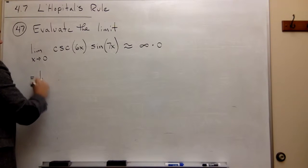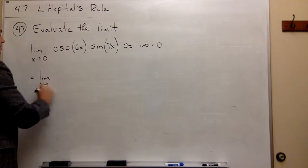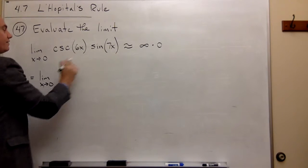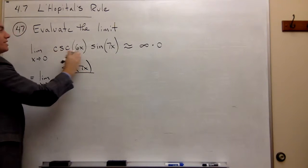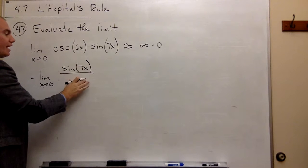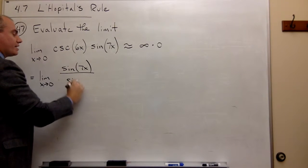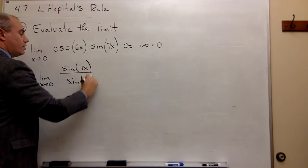So this is equal to the limit as x goes to 0. The sine of 7x will stay on top, but this cosecant of 6x I'm going to move down onto the bottom and write it as sine of 6x.